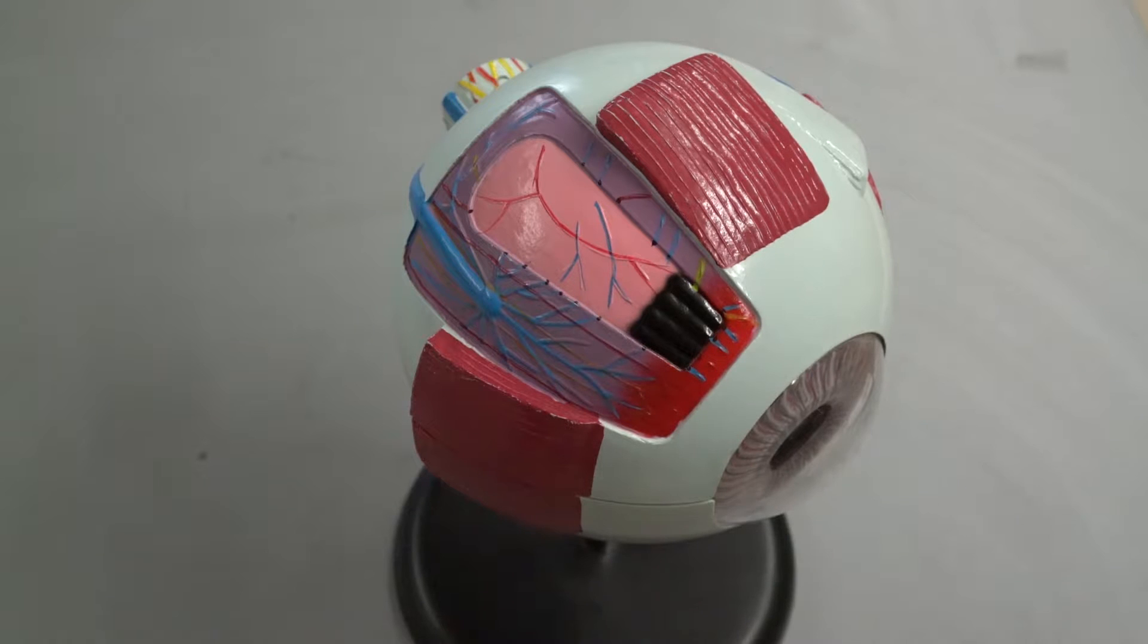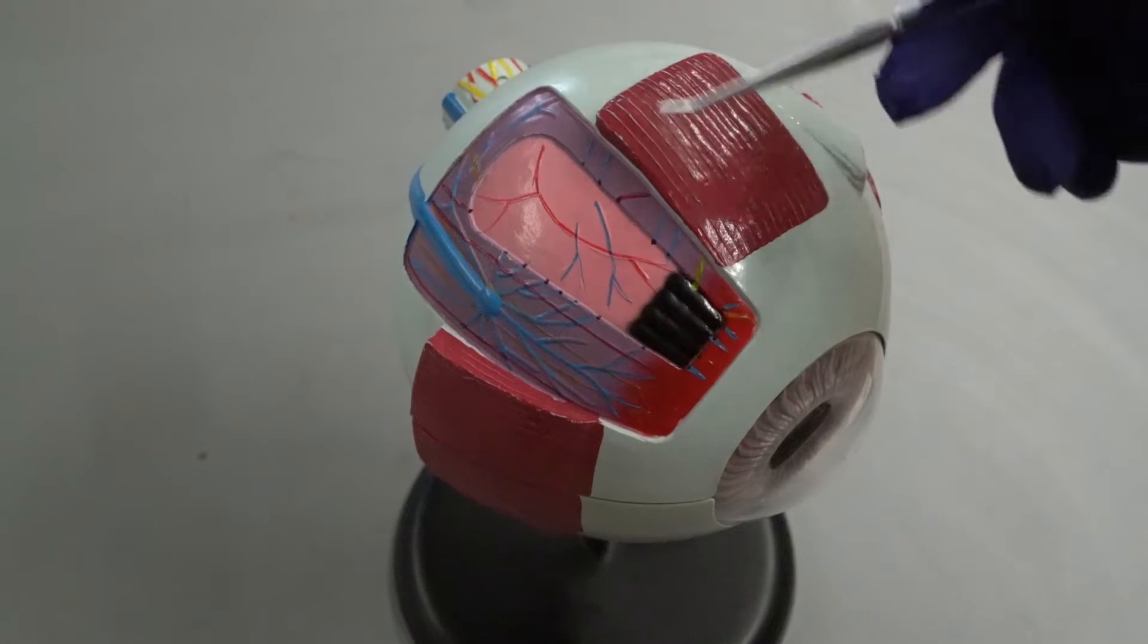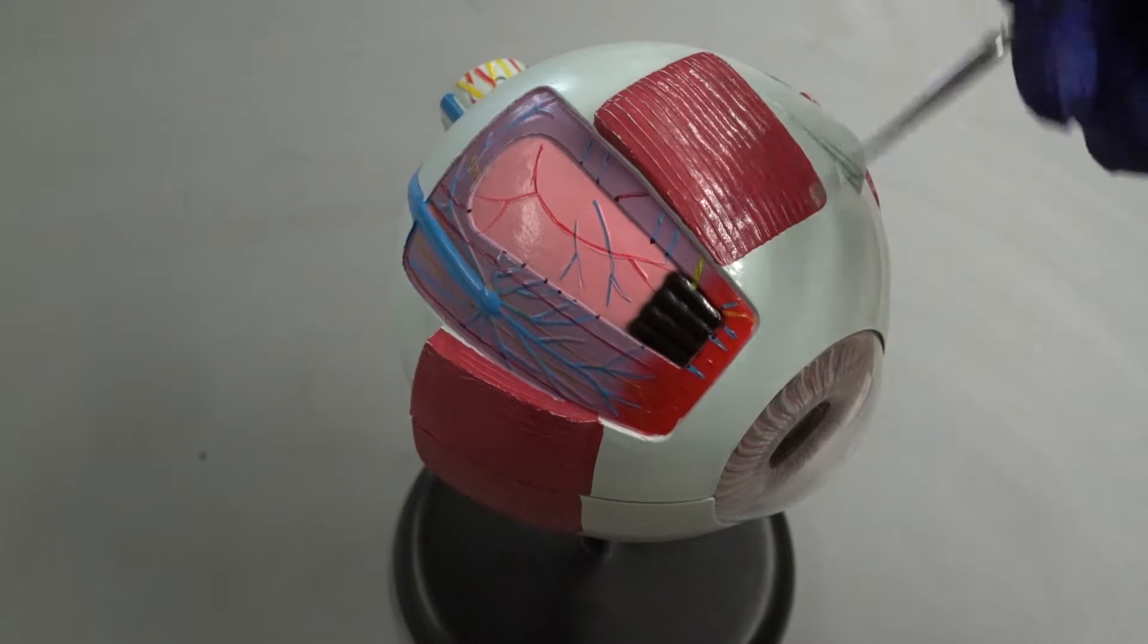Alright, so the first part is that there's three different layers to your eye. So the outer part here, this white part, is called your sclera. Sclera means hard in Greek, and it is the tougher part of the eye.